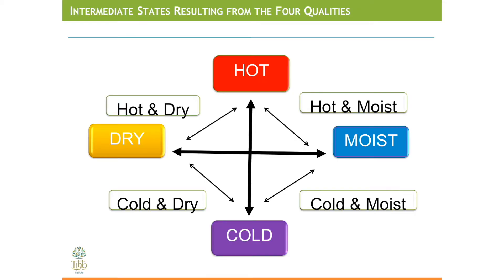Here's a slide that shows these intermediate states, where between the main quality of heat and moistness we have hot and moist. Similarly, we have cold and moist, and between coldness and dryness we have cold and dry, and between dryness and heat we have hot and dry.